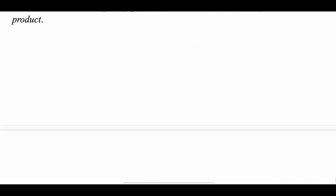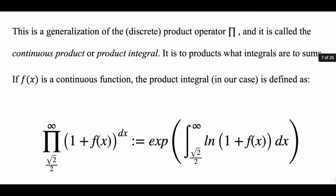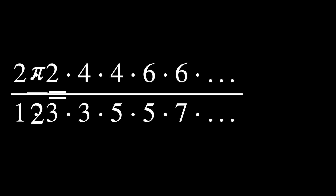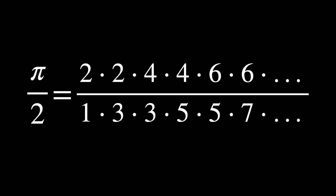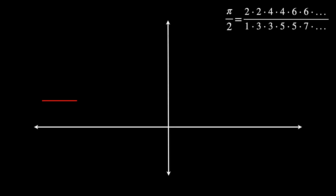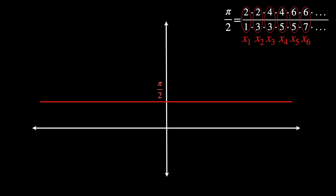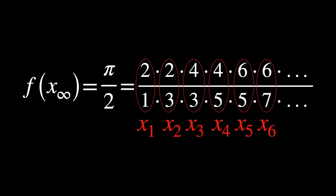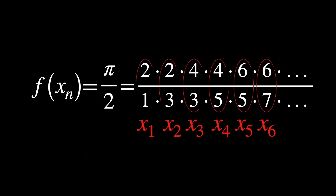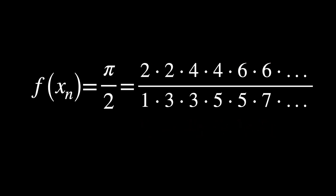Now let us see how the second sequence, the Wallis product, converges. Be ready because this one will be a little weirder. We'll plot its graph as a function of each of these terms just as before, calling it f of x-infinity, and its representation up to n iterations follows the same form.